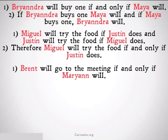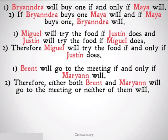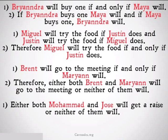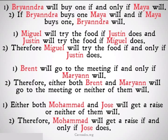Brent will go to the meeting if and only if Marianne will. Therefore, either both Brent and Marianne will go to the meeting, or neither of them will. Note that this is a different replacement. Either both Mohamed and Jose will get a raise or neither of them will. Therefore, Mohamed will get a raise if and only if Jose does.